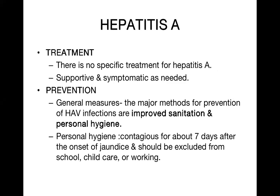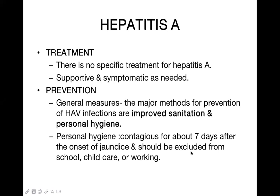Regarding prevention: the fecal-oral route is the main way of transmission, so good hygienic practices including improved sanitation should be done. The child or patient is contagious for about seven days after the onset of jaundice, so should be excluded from school, child care, or workplace during this period.